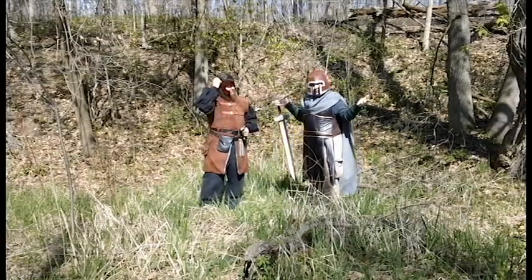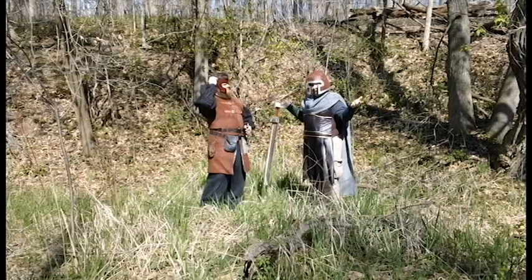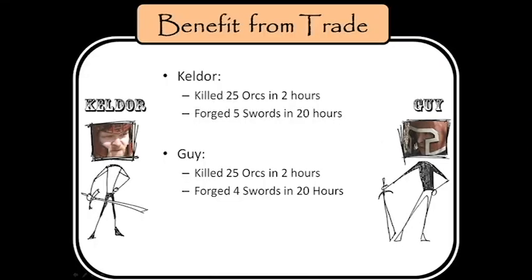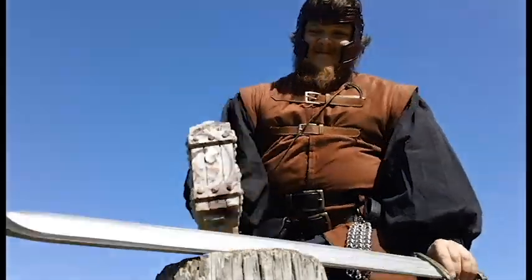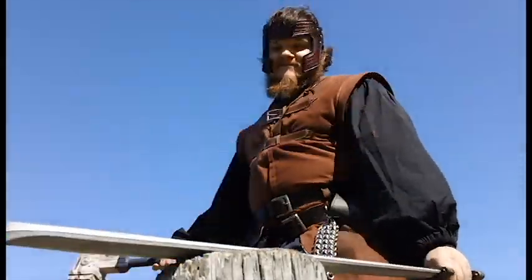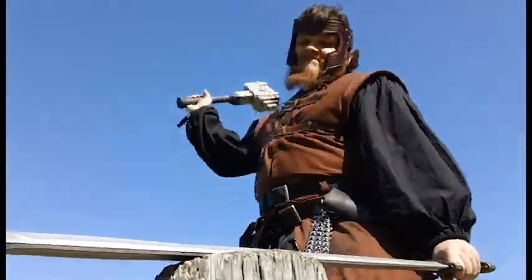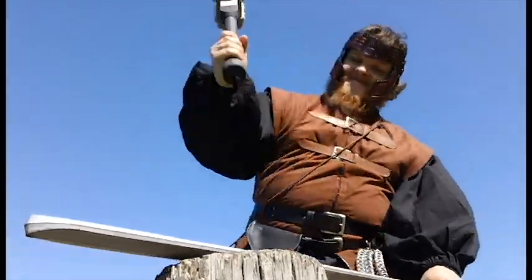How did they compare? Kelder and Guy were equals at orc slaying, with each killing 25 orcs in 2 hours, but Kelder was much better at sword making. This gives Kelder an absolute advantage in sword making. Having an absolute advantage means having the ability to produce a good using fewer inputs than another producer. Kelder can produce one sword in 4 hours, which is much faster than Guy, who takes him 5 hours.